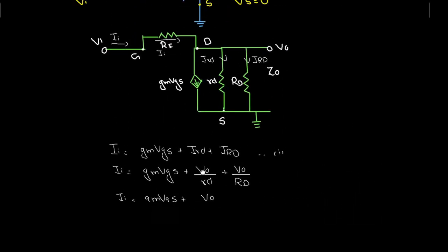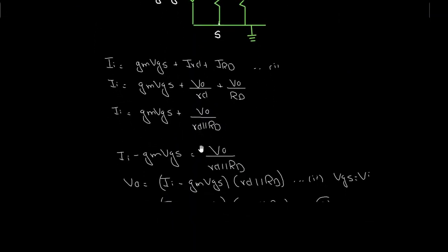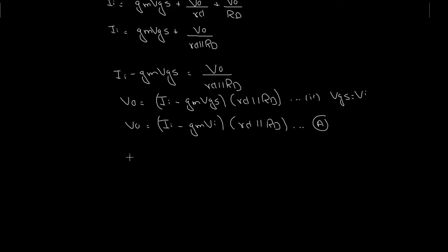Now, what is Ii? The current Ii flows through RF, with the gate terminal at Vg = Vi and the drain terminal at Vd = V0. Therefore Ii = (Vi − V0) / RF. This is equation B. Substituting equation A for V0 into equation B: Ii = [Vi − (Ii − GmVi)(rd ∥ RD)] / RF.